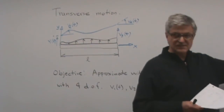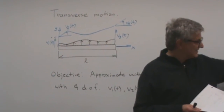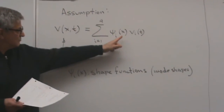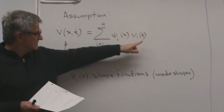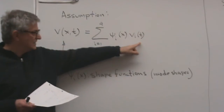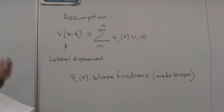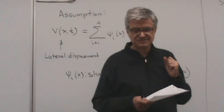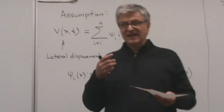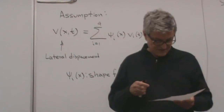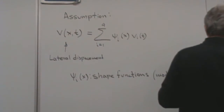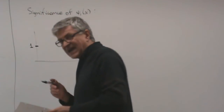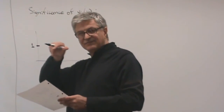The assumption is that the lateral displacement all along the beam is expressed as a product of a shape function times the displacement at one end or the other. What is the significance of a shape function, for example psi_1(x)? Let's make a mental experiment. Suppose that you displace the left end by one unit, but you don't let the left end rotate — you just displace it and force it to remain horizontal.